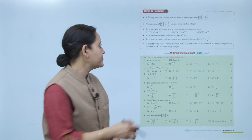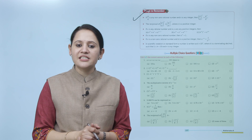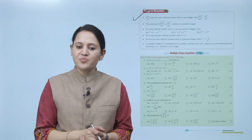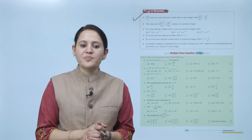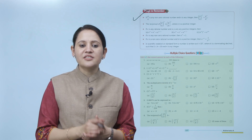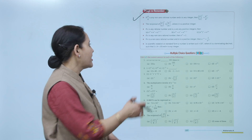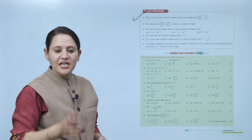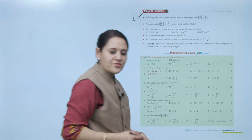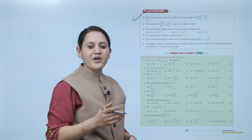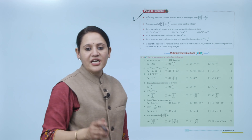Next, things to remember. If P/Q is any non-zero rational number and n is an integer, then (P/Q)^n = P^n / Q^n. The reciprocal of (P/Q)^n is (Q/P)^(-n), where n is a positive integer. If x is any rational number and m and n are positive integers, then x^m × x^n = x^(m+n) — same base means powers are added. Also, x^m ÷ x^n = x^(m-n).